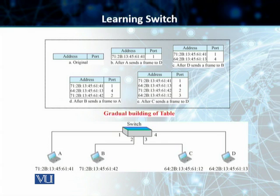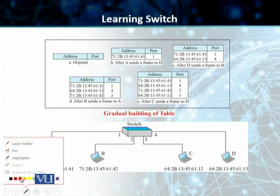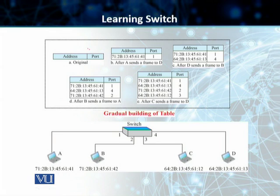In this figure, you can look at an example of the learning process used in a switch. You can see that initially, in the original state, your switching table is completely empty. There are no addresses and there are no corresponding ports in the switching table of this switch.